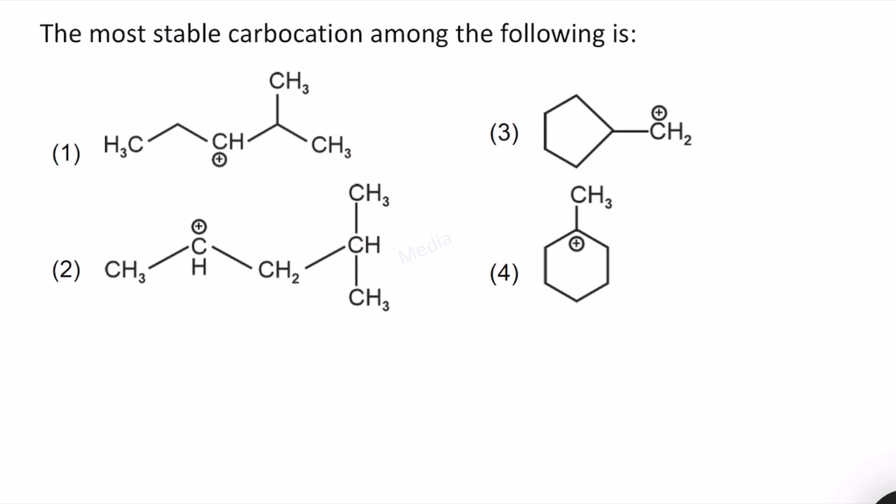That means if we have more number of alpha CH hydrogens, then the extent of hyperconjugation could be increased because the molecule can have more canonical forms.